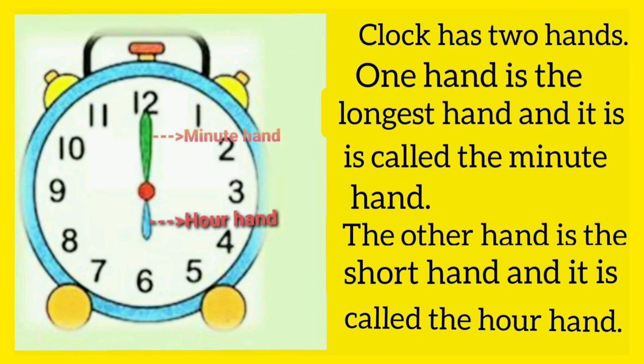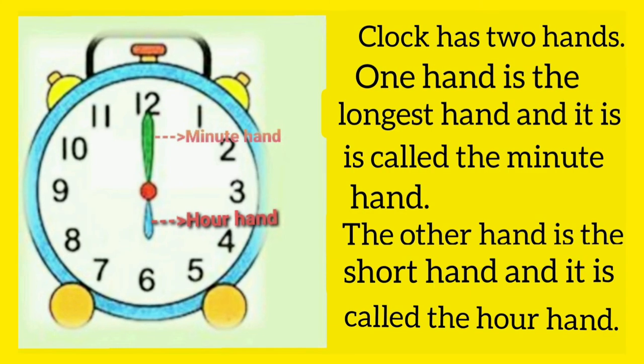Clock has two hands. One hand is the longest hand and it is called the minute hand. The other hand is the short hand and it is called the hour hand.